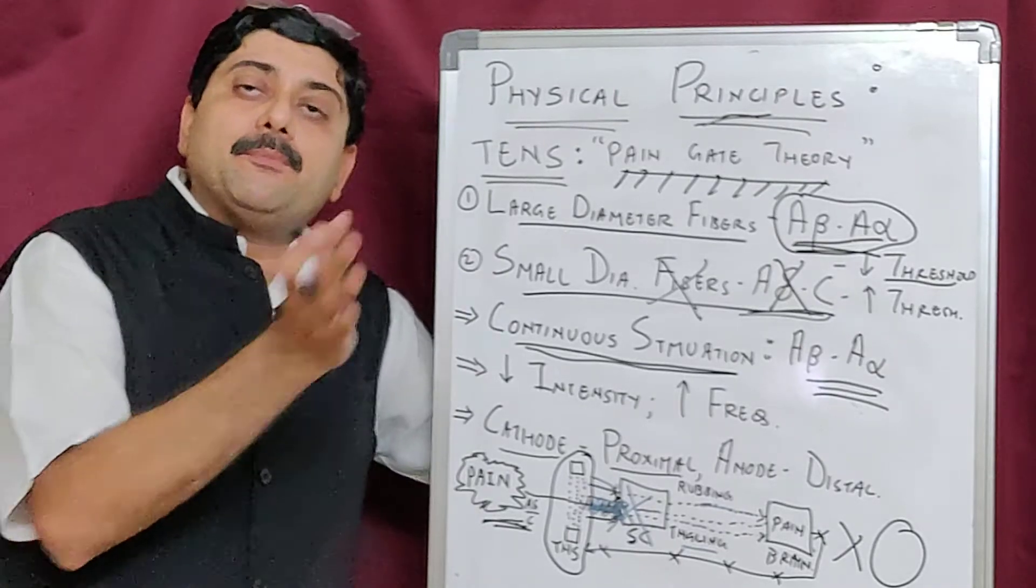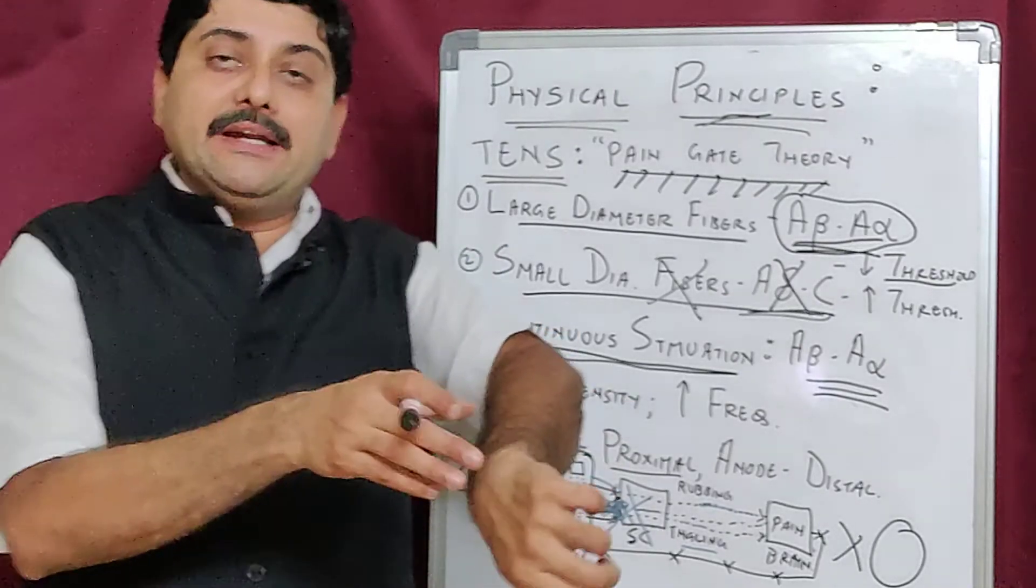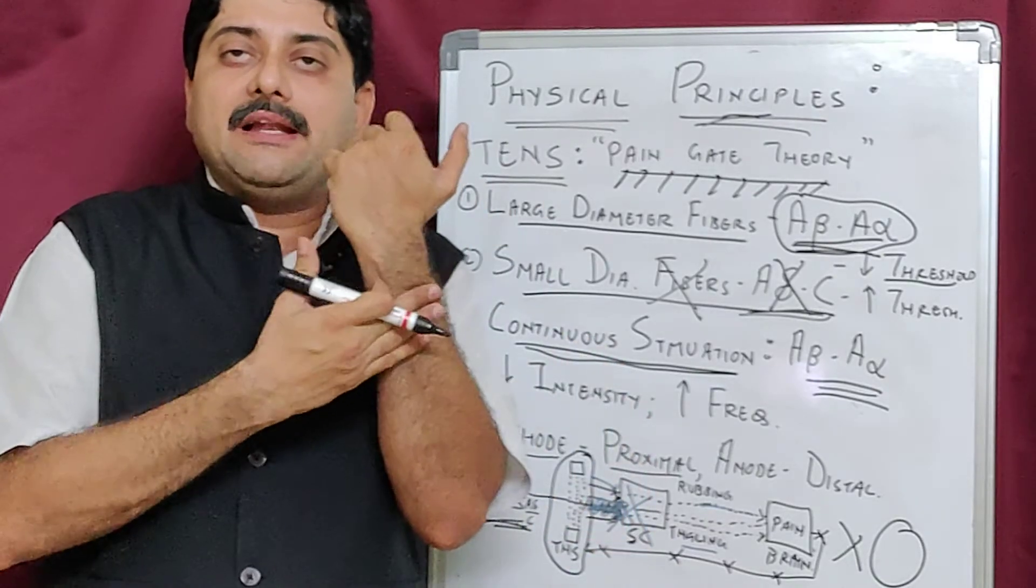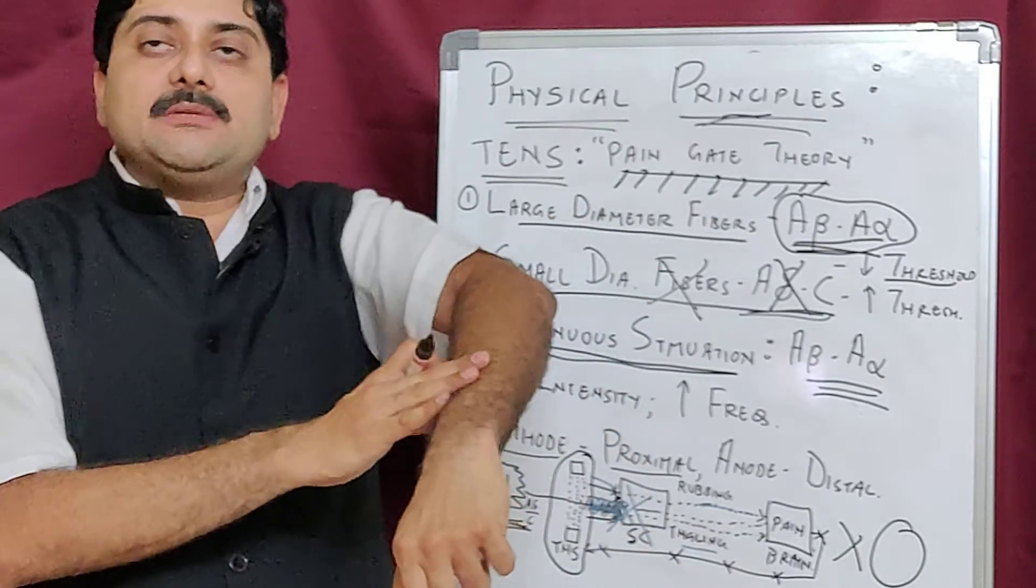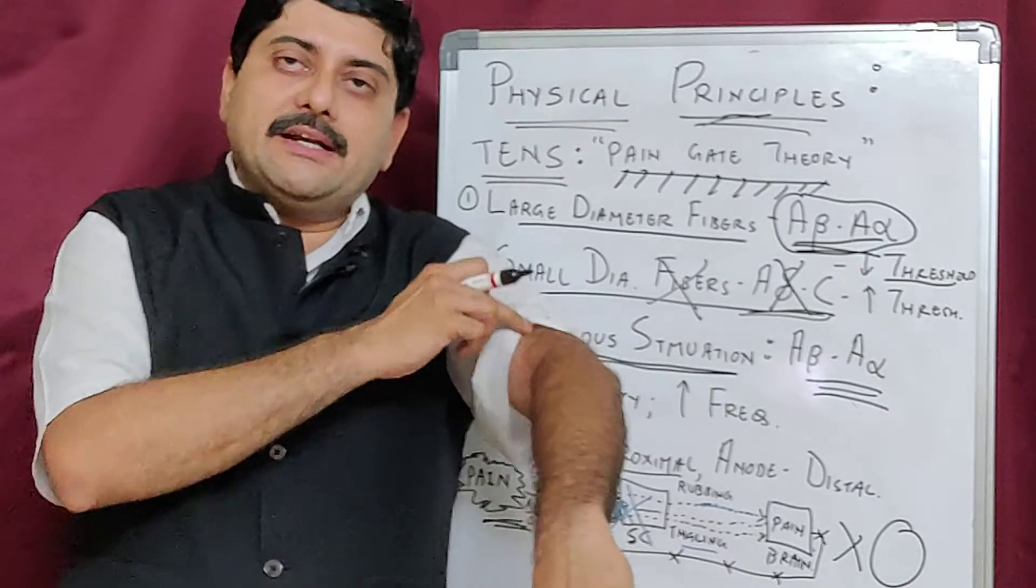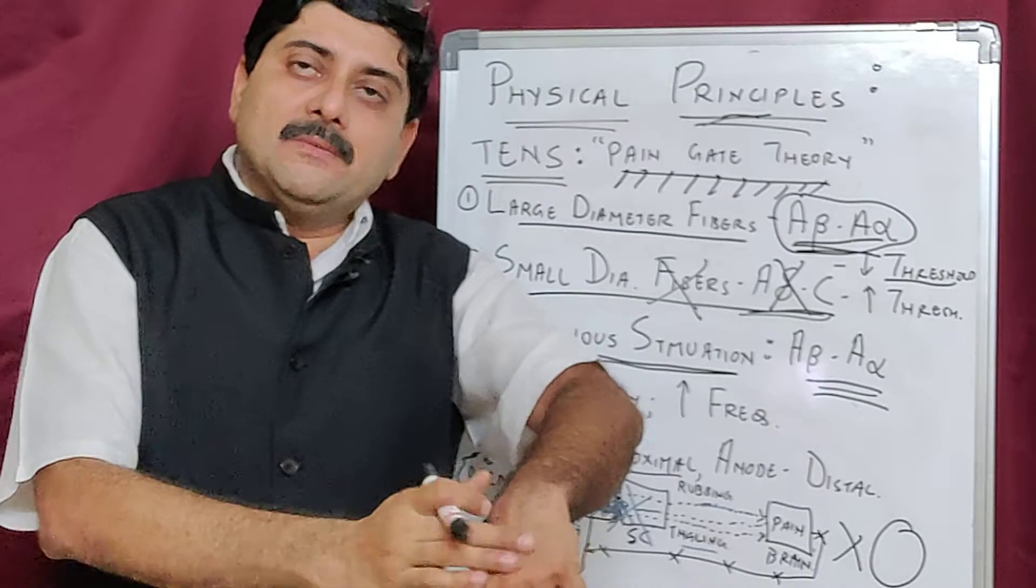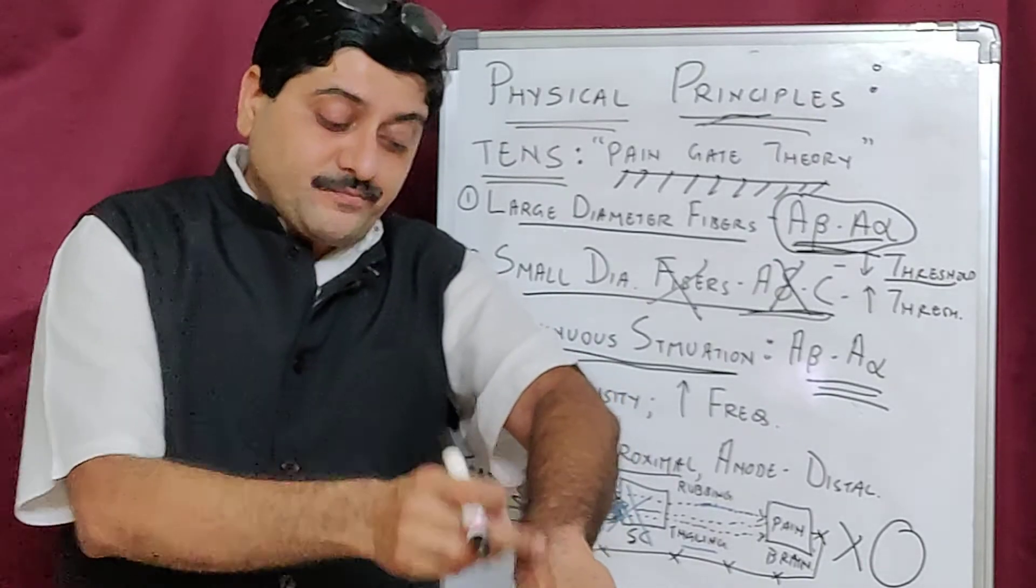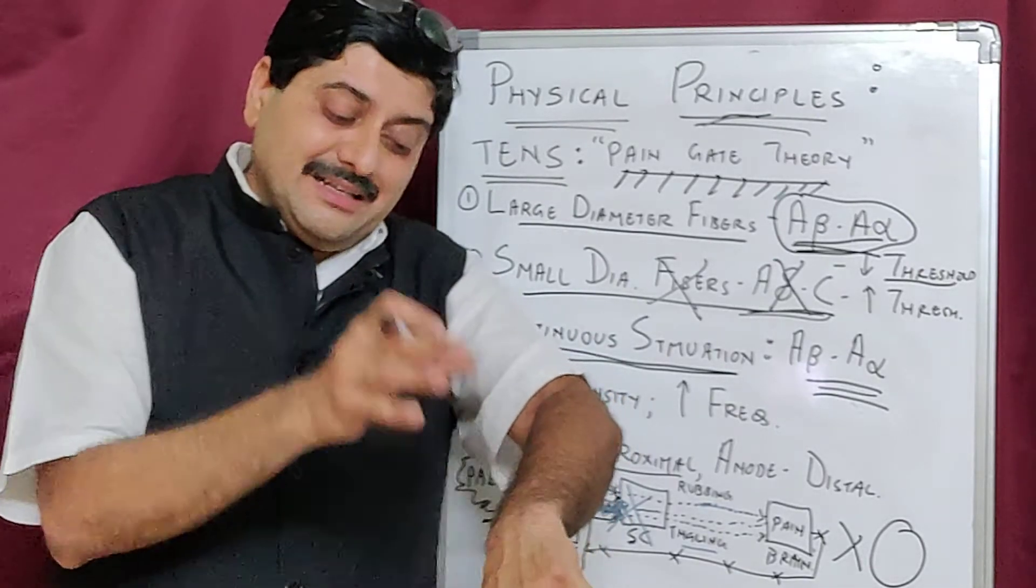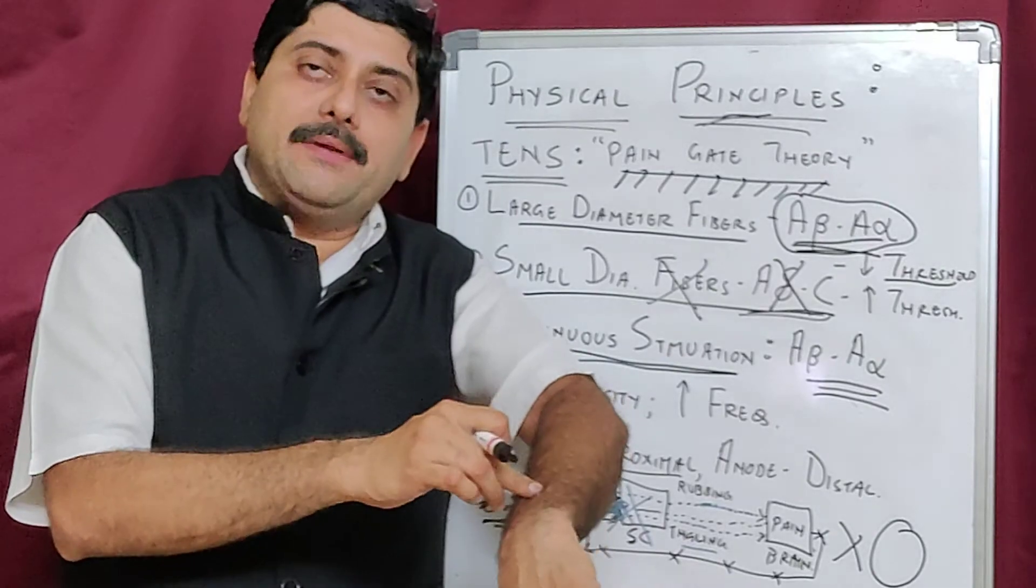If you want to treat my wrist, the proximal electrode will be cathode so that it transmits the sensations to the spinal cord. If it is kept below, then it will be blocked by the anode. You have to understand that whenever you are stimulating with TENS, the cathode has to be placed above and the anode has to be placed below distally.